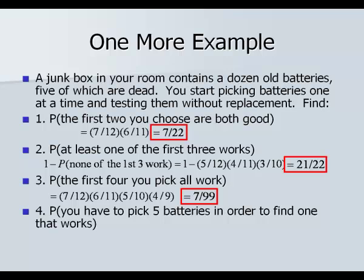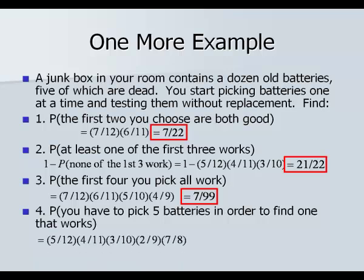Number four: find the probability that you have to pick five batteries to find one that works — meaning the first four were all bad and the fifth is good. That's 5/12 × 4/11 × 3/10 × 2/9 for the four bad ones. Then for the last battery, there are still 7 good ones left out of 8 total, so times 7 out of 8. Multiply in your calculator: you should get 7 over 792.